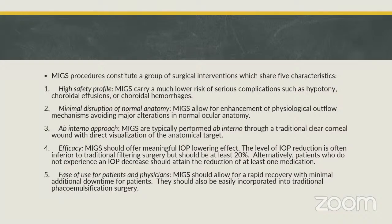These procedures share five characteristics, including a high safety profile. They carry a much lower risk of serious complications like hypotony, choroidal effusions, or choroidal hemorrhage. They cause minimal disruption of normal anatomy because they allow enhancement of physiological outflow. The ab-interno approach is done through a traditional clear corneal wound with direct visualization of the anatomical target. They offer a meaningful IOP lowering effect — the level of IOP reduction is often inferior to traditional filtering surgeries but is at least 20%. Patients who do not experience an IOP decrease should attain a reduction of at least one medication.